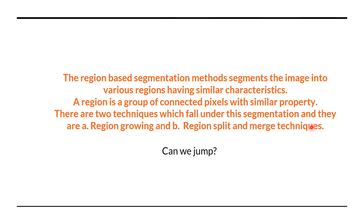The similar properties could be in terms of texture, intensity, color, or anything else. I need to identify if two sections share similar properties such that they can be grouped as a region. There are two techniques under region-based segmentation: the first is called region growing, and the second is called region split and merge.